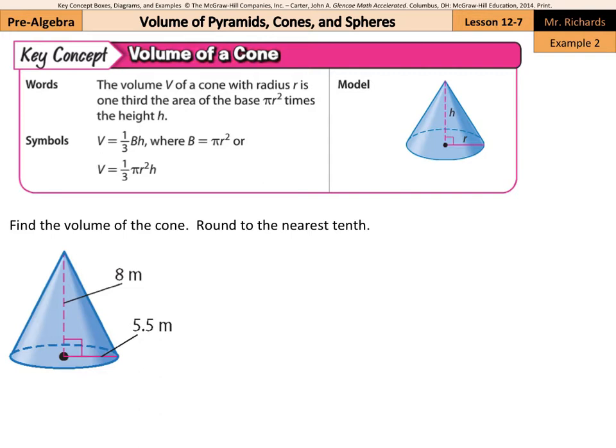So now we can find the volume of this cone, round to the nearest tenth. Well, if we start with volume equals one-third area of the base times the height, same formula as volume of a pyramid, except this time our base is a circle. So this is going to be one-third pi r squared times the height of the cone.